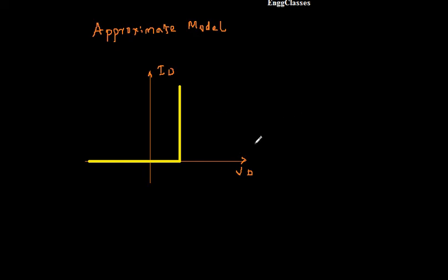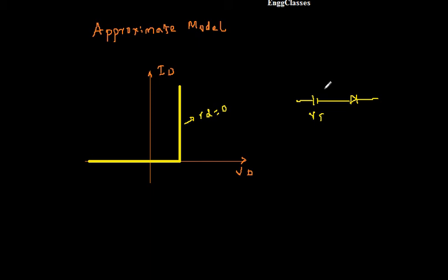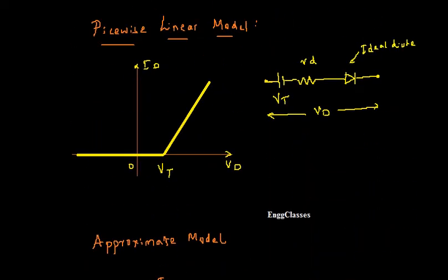For the approximate model equivalent circuit: Rd is equal to zero. The equivalent circuit includes an ideal diode and a battery voltage Vt — 0.7 V for silicon and 0.3 V for germanium. The applied forward voltage is Vd. There is no dynamic resistance in this model. This is how the approximate model equivalent circuit looks.